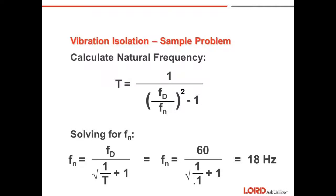We want to solve for Fn. We know Fd, which is 60 hertz. We know transmissibility of 0.1. If we plug those in the formula, Fd, which is 60, divided by the square root of 1 divided by T, 0.1 plus 1, calculation is 18 hertz.